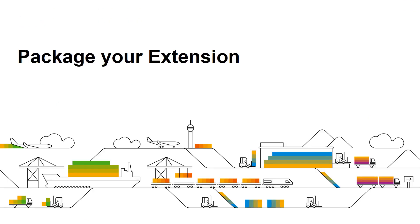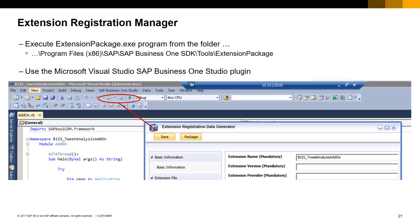In order to get your SAP HANA XSC app registered and running in the SAP Business One client, you need to create an extension registration file that will package together your SAP HANA XSC delivery unit and the add-on created in the previous section. To create the extension registration file, we will use the extension registration manager. There are two options: option one is to use the extension package tool executable available from the SAP Business One SDK installation folder under Tools > Extension Package; option two is to use the Microsoft Visual Studio SAP Business One Studio plugin.